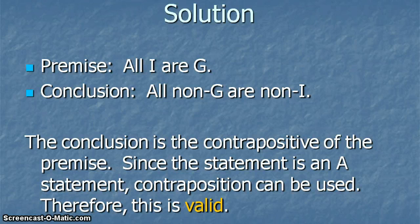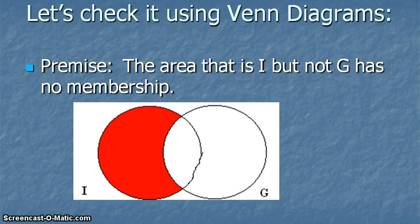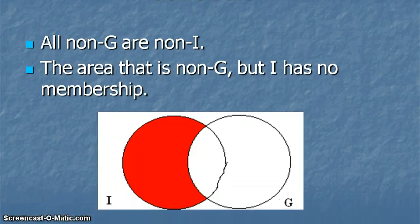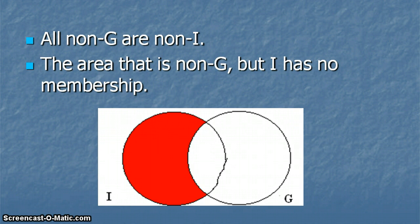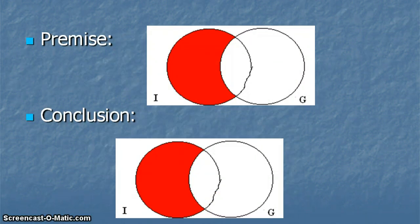We can check it using Venn diagrams. The premise is that the area that is I but not G has no membership, so we shade the area that is I but not G. The conclusion — all non-G are non-I — just means that the area that is not G but I has no membership. The premise and the conclusion are exactly the same, so it's valid.